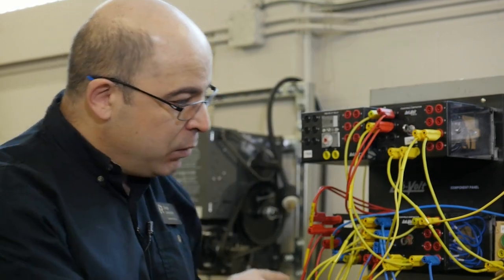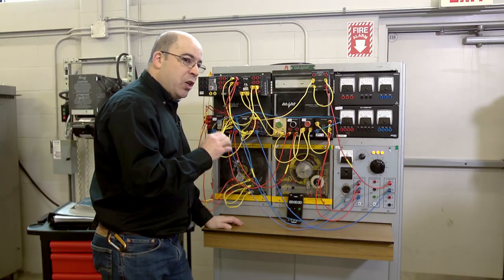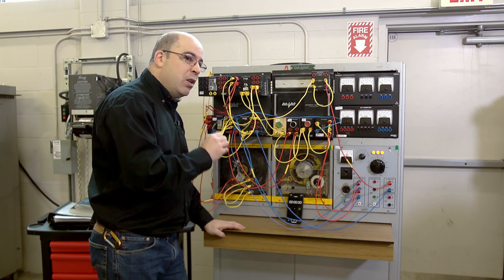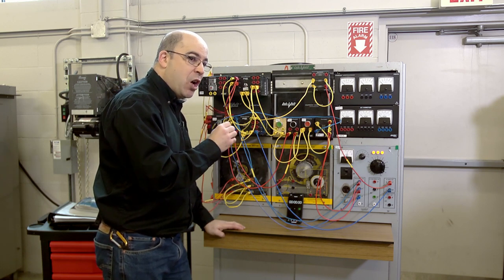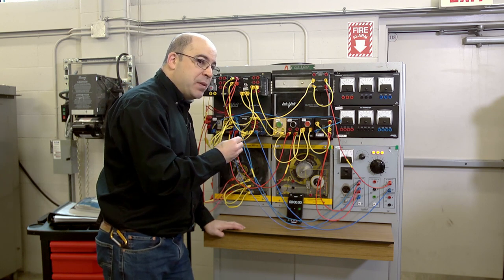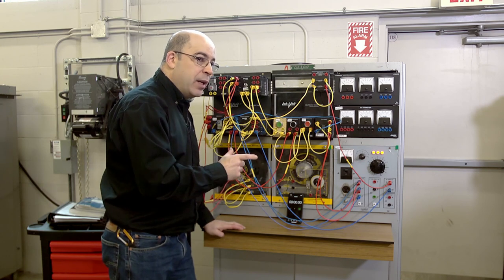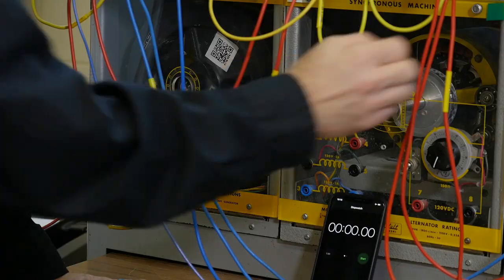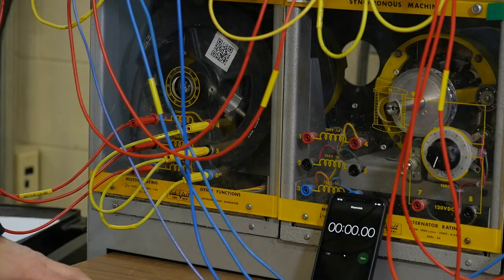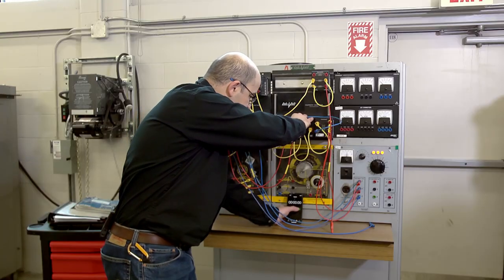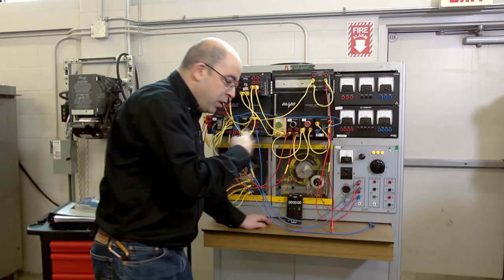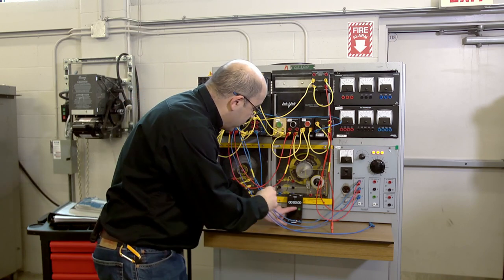So first things first, I'm going to run the machine, we're going to turn it off, and we're going to time how long it takes to coast to a stop. We're going to repeat the process but using the eddy current brake and we'll look at the difference in between. So I'm going to go ahead and hit the start button and we're going to see once I turn it off how long it's going to take for it to coast.